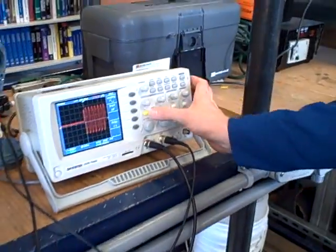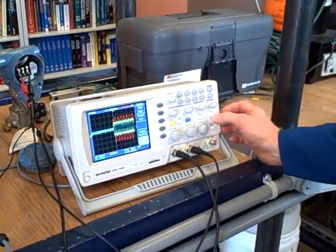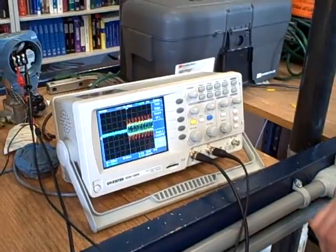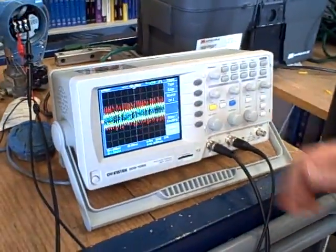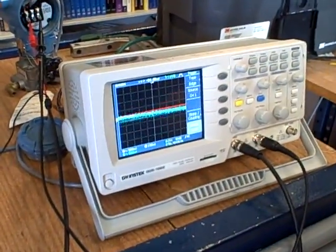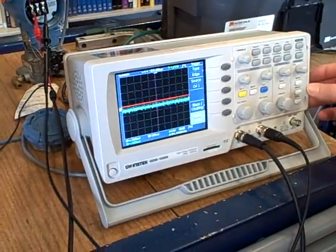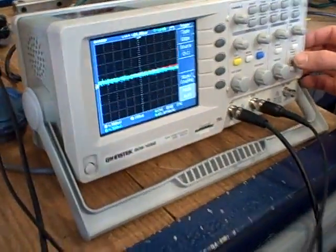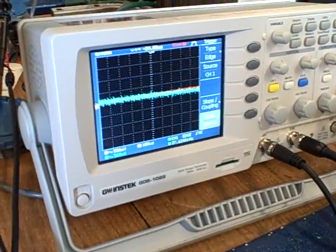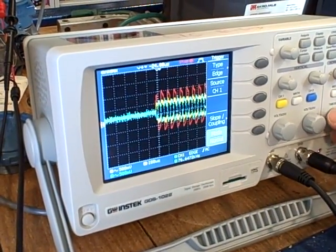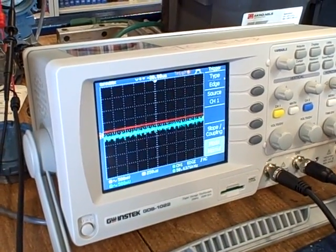So I'm going to go back to showing channel one and two, go back to our menu, normal triggering. And you can see bursts of data on the field bus system. I want you to notice something else, too. Let me slow this down just a bit in my time division. Go single trace again.